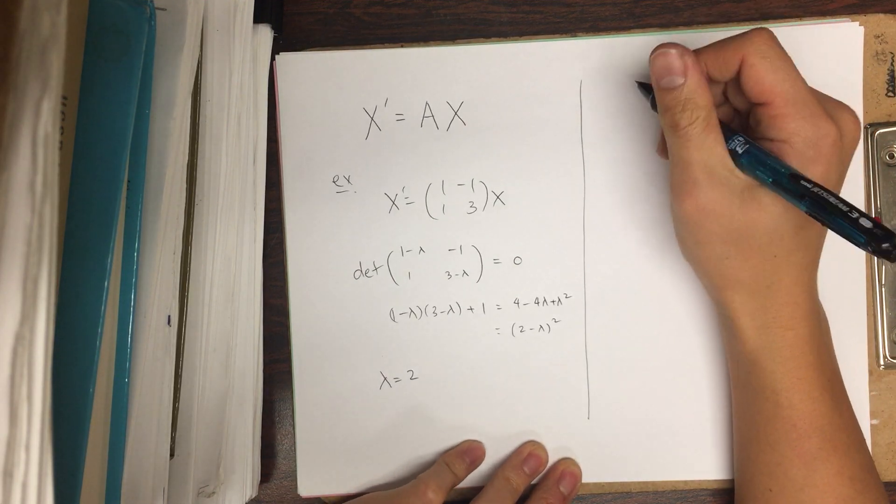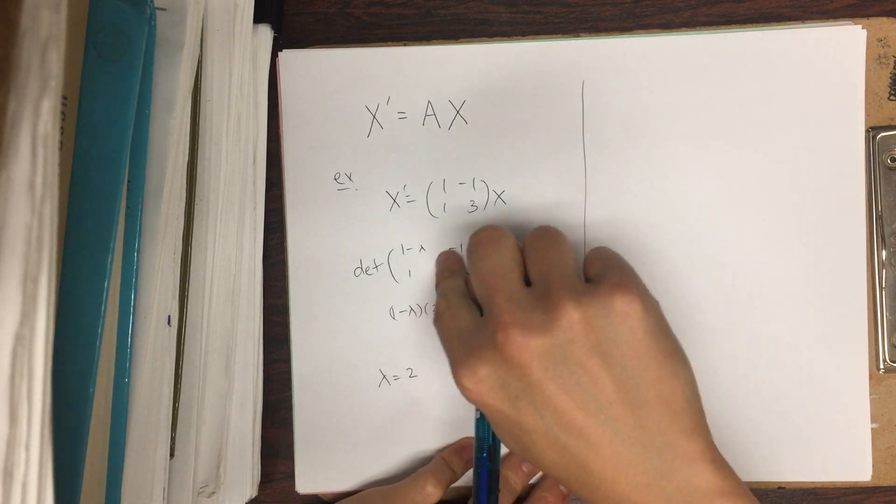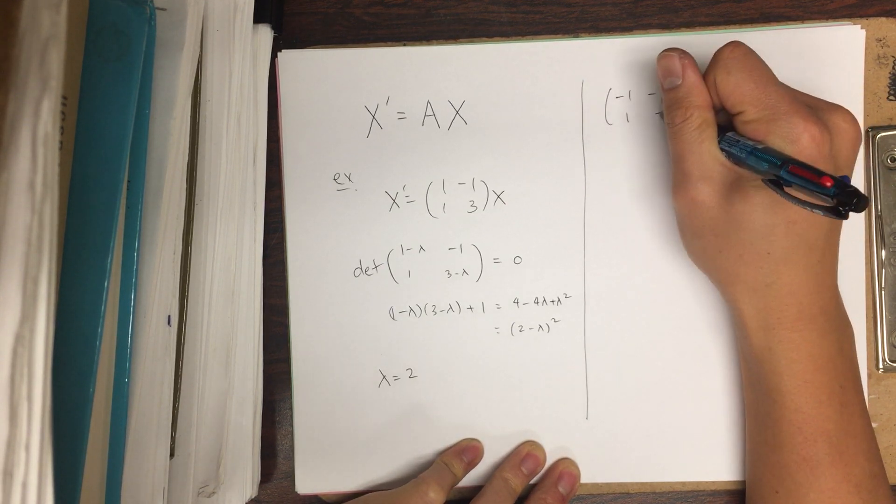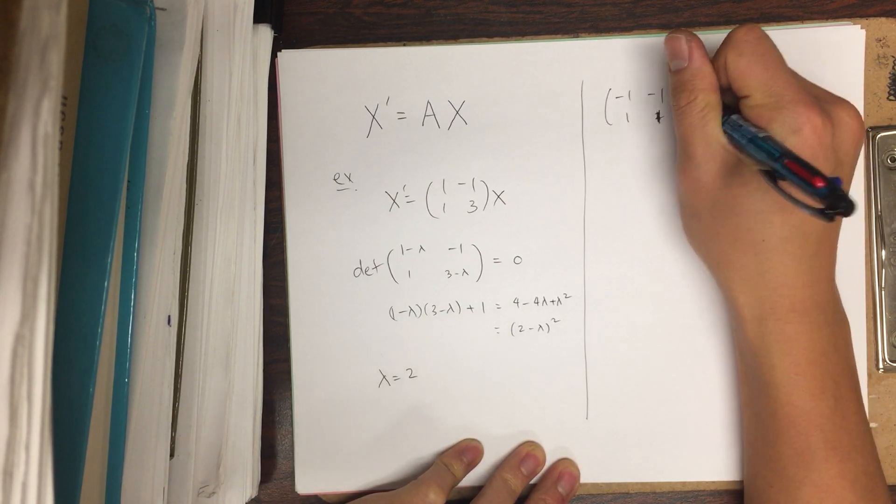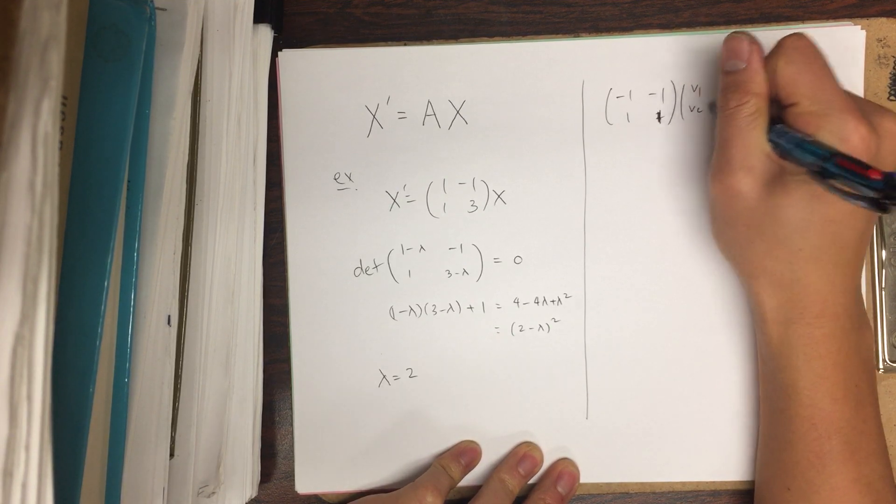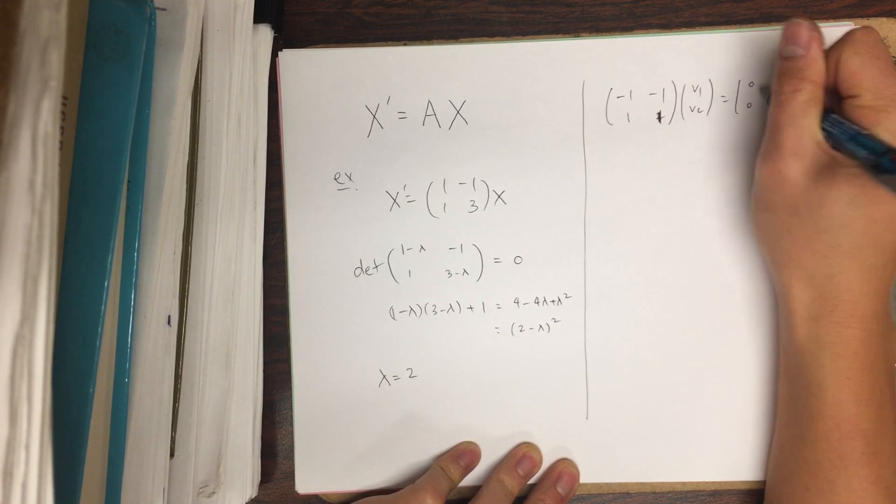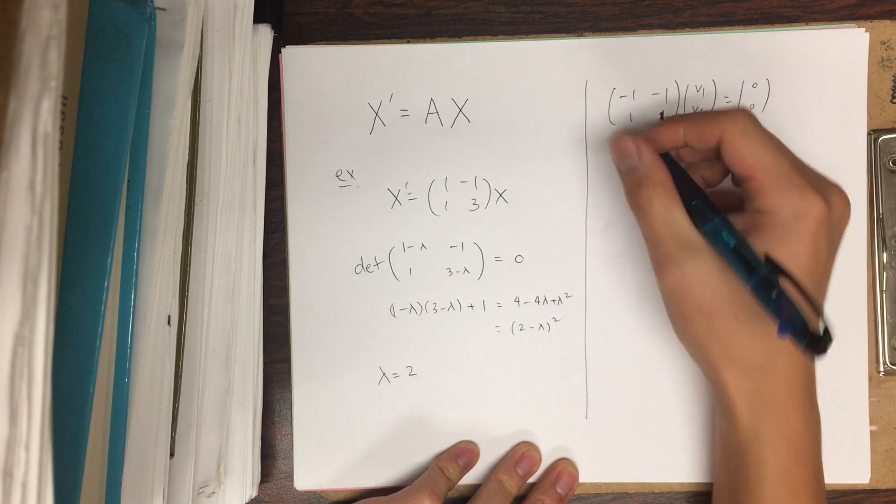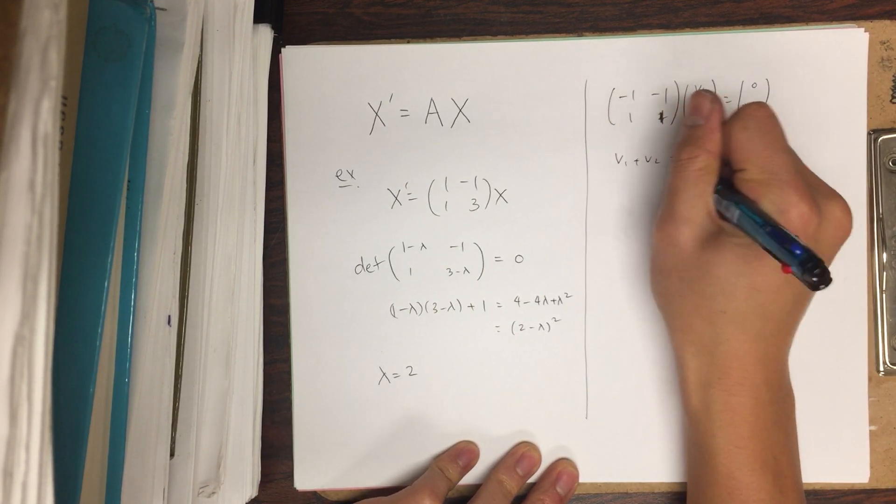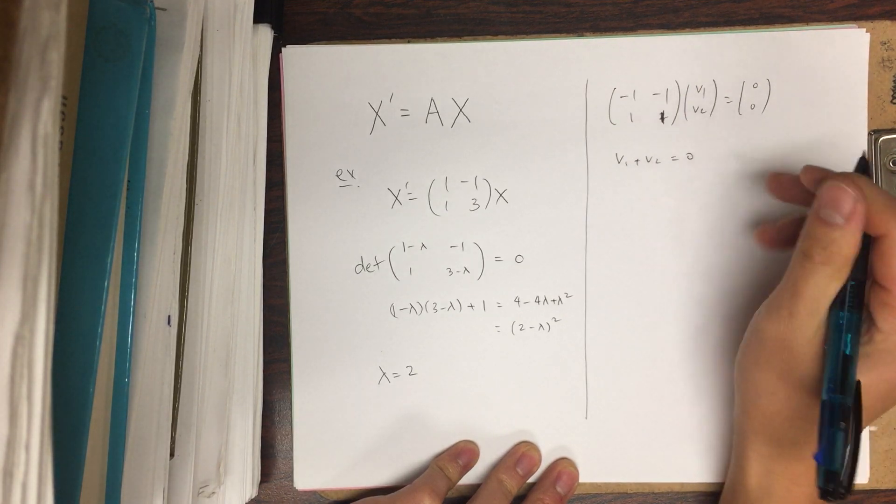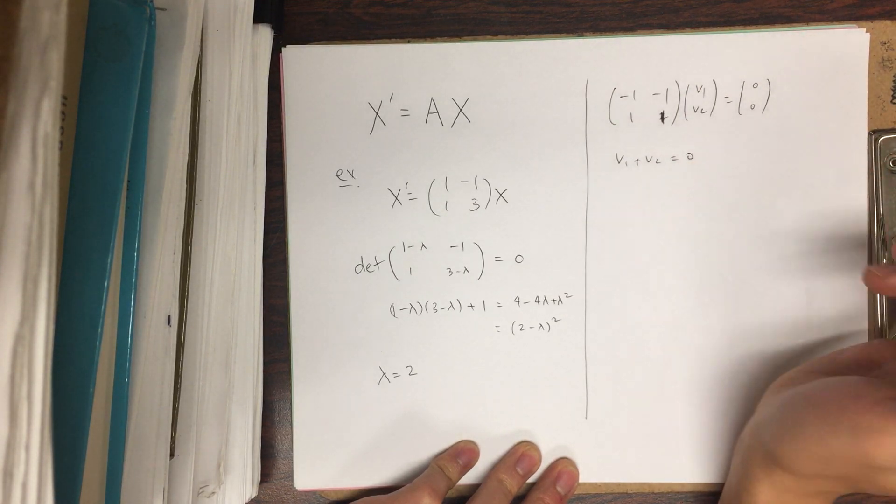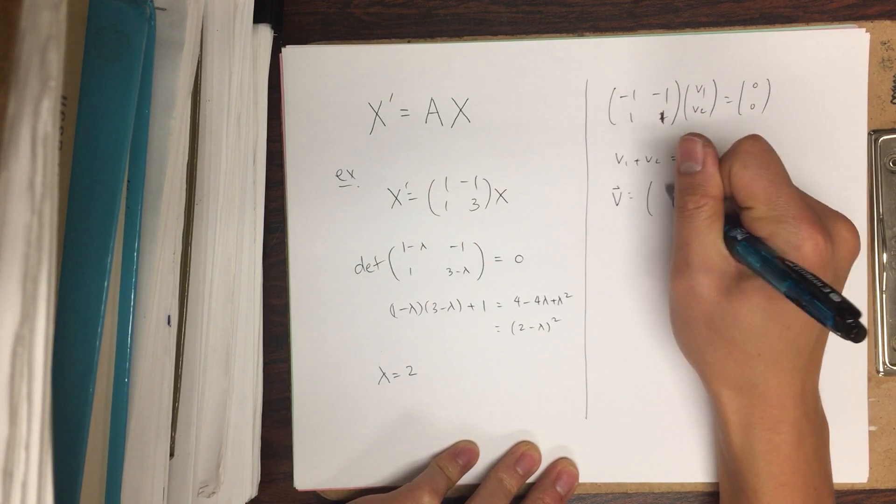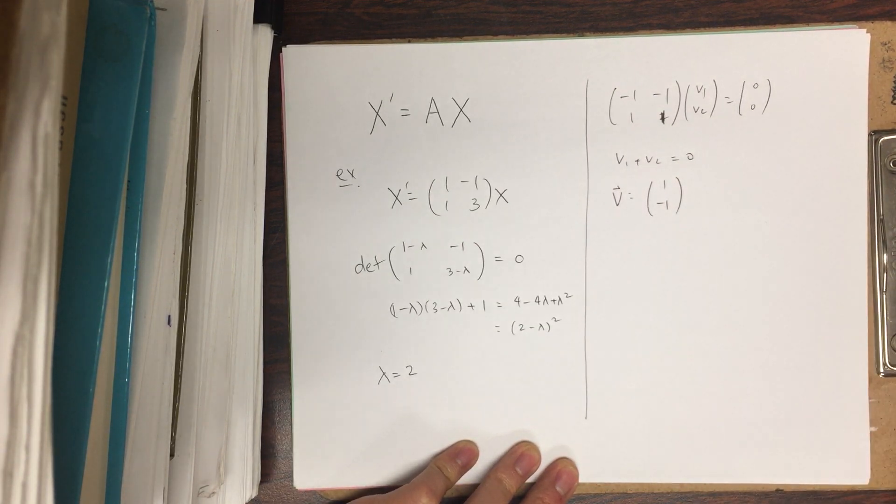Okay, and so to compute the eigenvector we plug this back in and so we have [-1, -1; 1, 1] times [v1, v2] equals [0, 0]. And so these are multiples of each other and so we just have one equation, and so any two numbers that satisfy this would be fine but they can't both be 0. And so one eigenvector is [1, -1].